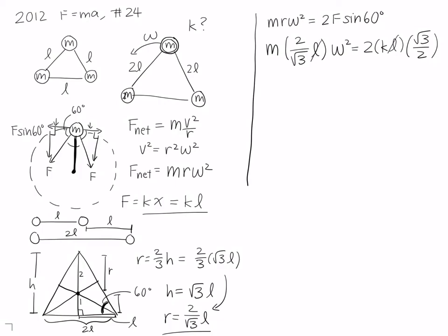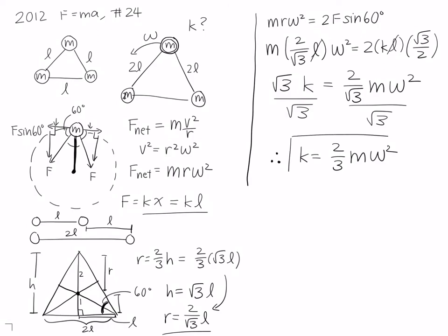First off, we can cancel off our L's. So we have that 2 times root 3 over 2 times k, which is just root 3 times k, is equal to 2 over root 3 m omega squared. Now if we divide by root 3 on both sides in order to solve for k, what we find is that ultimately k is equal to 2 over 3 m omega squared. And this is our spring constant for our system.